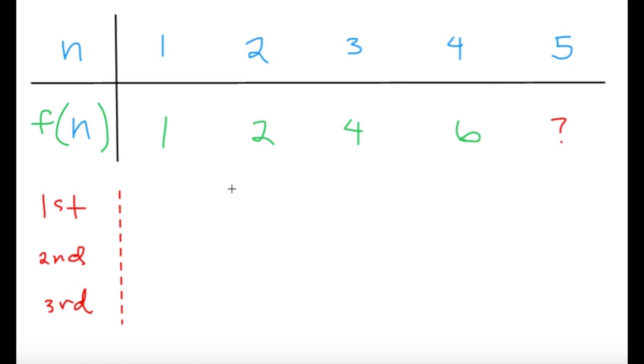So, from 1 to 2, we're going to get 1. From 2 to 4, we're going to get 2. From 4 to 6, we have 2. Now, we don't really know what this part is, so we'll just leave it blank for now.